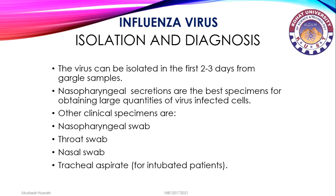Isolation and diagnosis of influenza virus: the virus can be isolated in the first two or three days from gargle samples. Nasopharyngeal secretions are the best specimens for obtaining large quantities of virus-infected cells. Other clinical specimens include nasopharyngeal swab, throat swab, nasal swab, and tracheal aspirate for intubated patients.